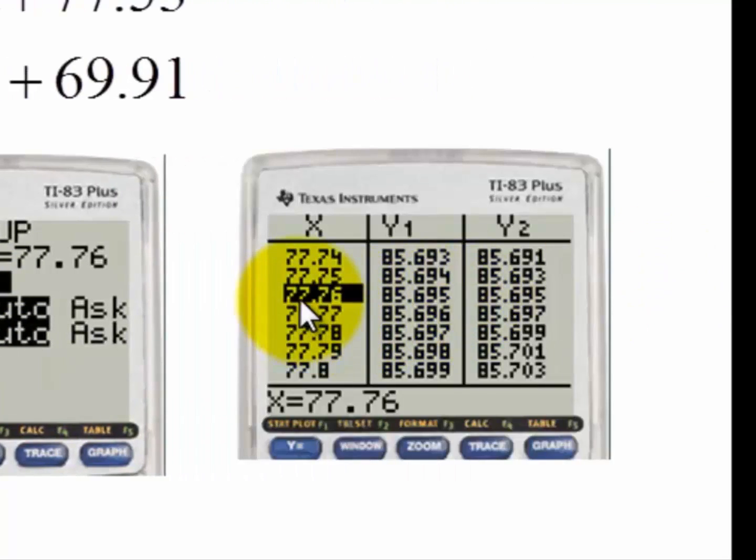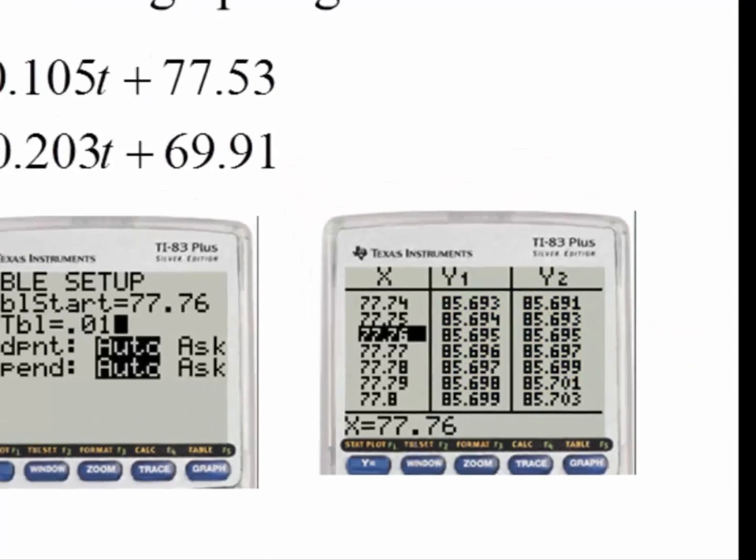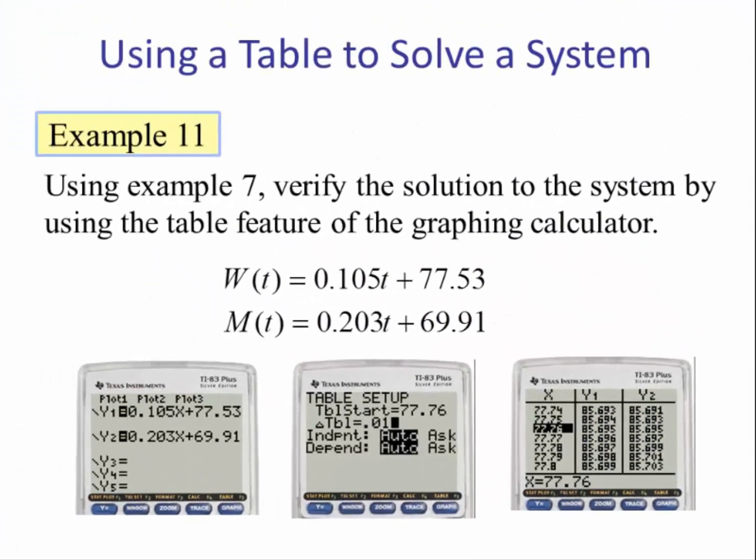And we see at 77.76, y1 and y2 have the same y value, and that is the only place in the table where y1 equals y2. The solution to this system would be when x is 77.76, y will be 85.695.